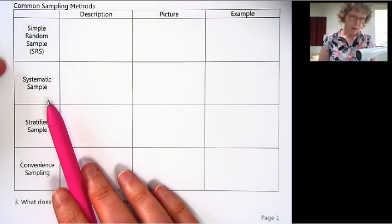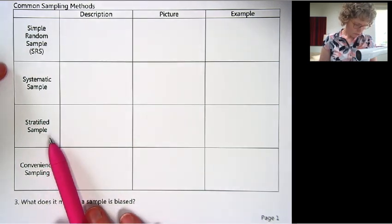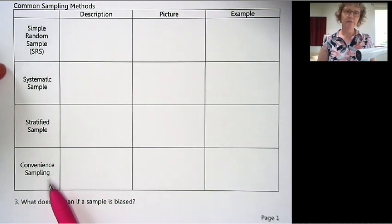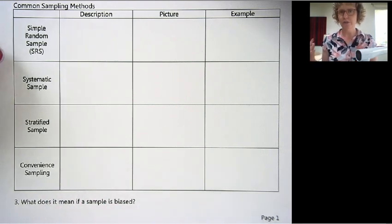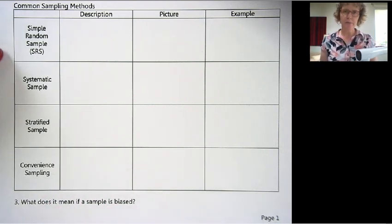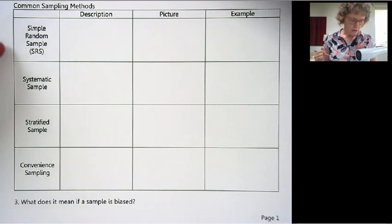Simple random sample, systematic sample, stratified sample, and convenience sampling. We have a question of interest or something we want to know about our population, but it's too time consuming or expensive or impossible to ask or measure everyone or every item in our population. So we get a sample. But how do we get that sample? So these are four different ways.